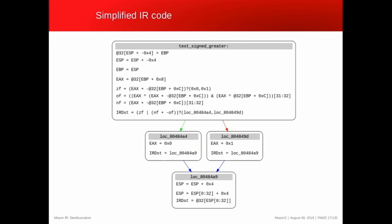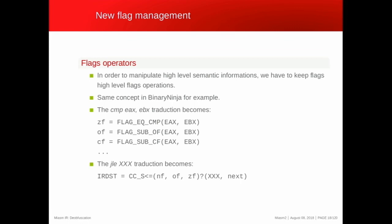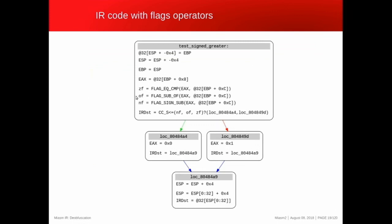But we can do better. A new feature in MIASM is to replace the detailed intermediate flag equations with high-level flag representations. Instead of having very large equations in the IR, you have a simple operator that does the same thing but is much simpler. Similarly, a JLE (jump less or equal) will be represented by a new operator that captures only the parts of EFLAGS used to compute that conditional jump.